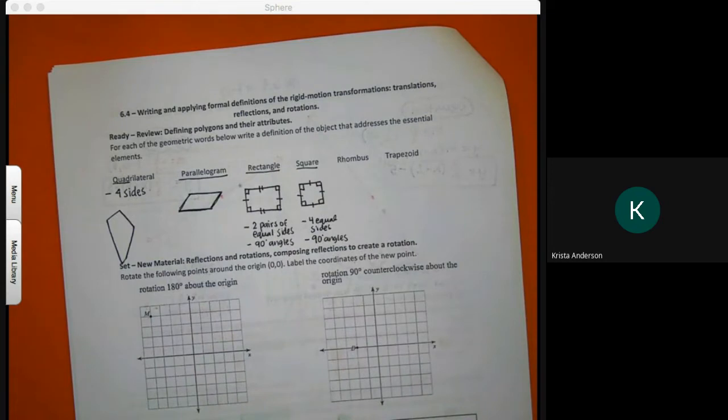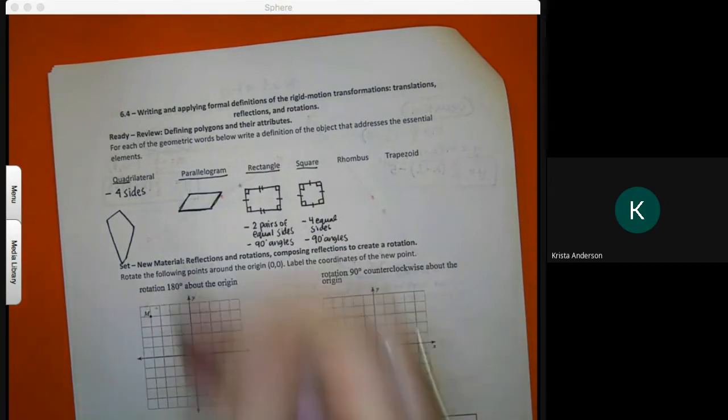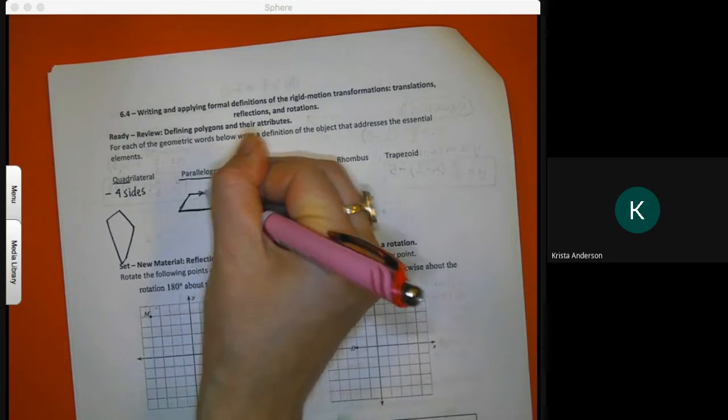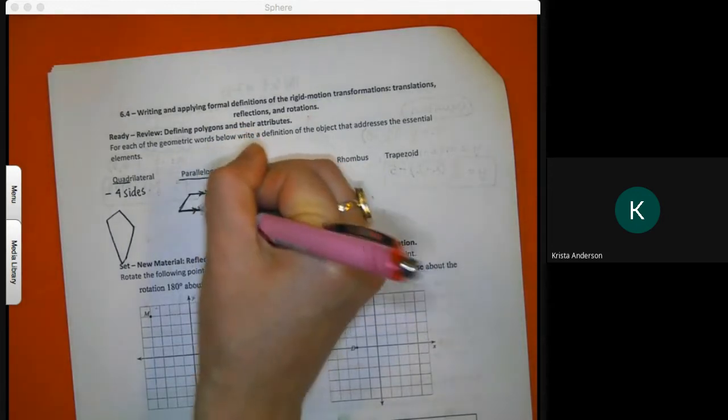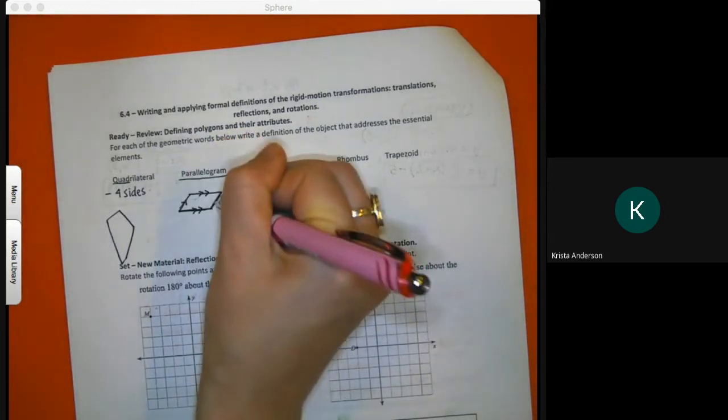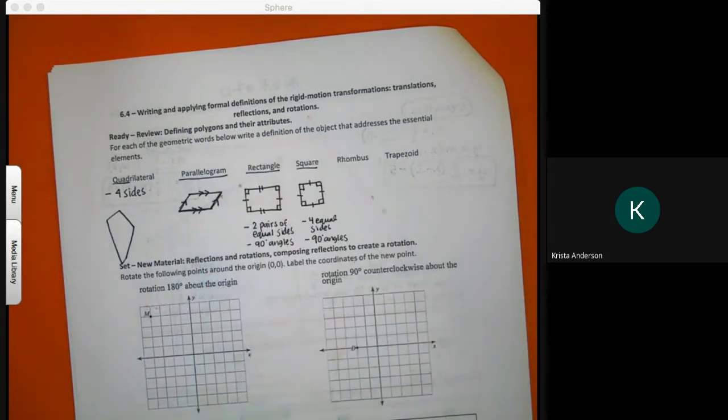When you see a picture of a parallelogram they usually label it with two arrows and one arrow. The arrows mean that they're parallel to each other - parallel, parallel.